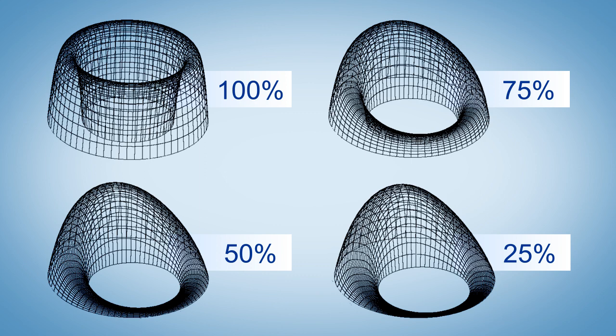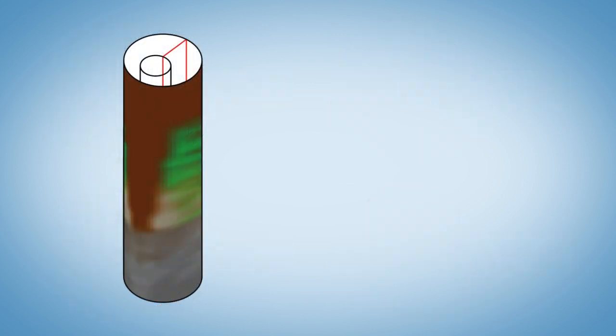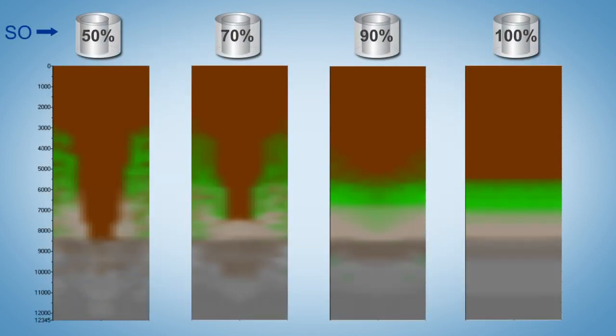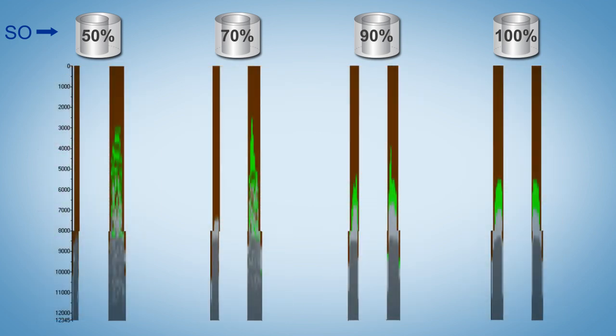As the standoff gets lower, the frictional pressure drop decreases and mud removal becomes a problem in the narrow side. Here we are unwrapping the annulus into a 2D picture. From the pictures we can see that the mud channel becomes more severe as standoff gets lower to 50%. Side views confirm the findings.